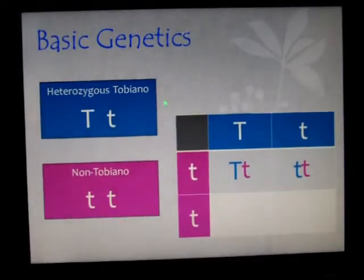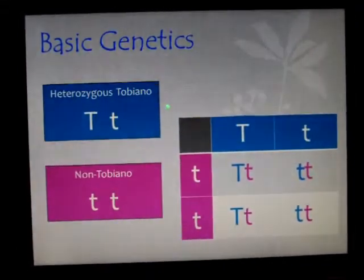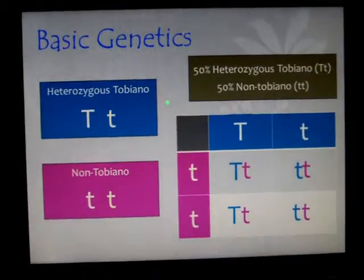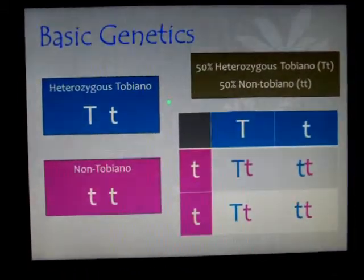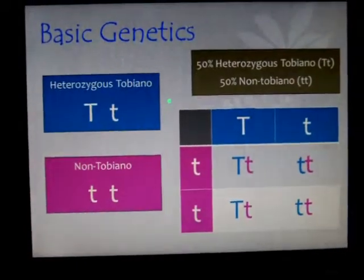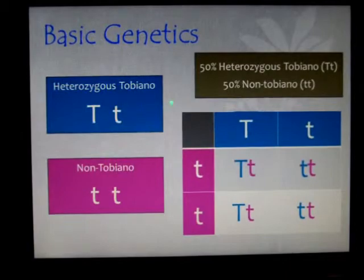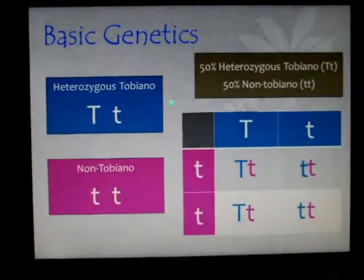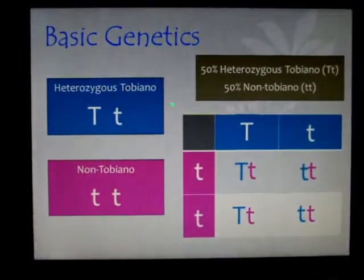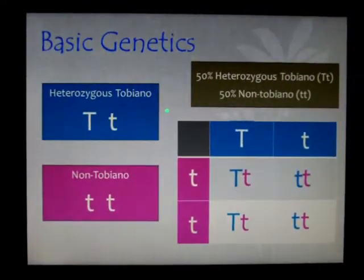The bottom left square will be a big T little t, and the bottom right will be two little t's, as you can see here. Looking at this, we've got two heterozygous tobianos and two non-tobianos, so that would be a 50/50 chance in this pairing that you would have a tobiano foal. The non-tobianos — the two small t's — could be overos or they could be solids.